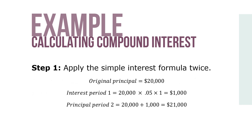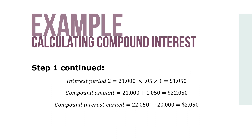Step 1: Apply the simple interest formula twice. The original principal is $20,000. Interest for period 1 is $20,000 times 0.05 times 1, which equals $1,000. The principal for period 2 is $20,000 plus $1,000, which equals $21,000. Interest for period 2 is $21,000 times 0.05 times 1, which equals $1,050. So the compound amount is $21,000 plus $1,050, for a total of $22,050.